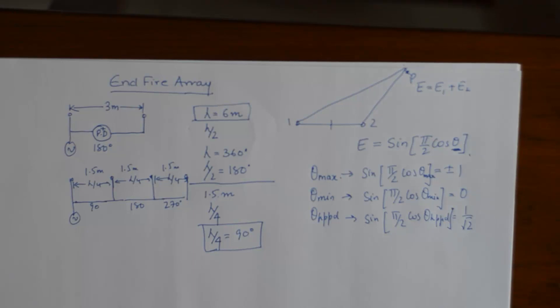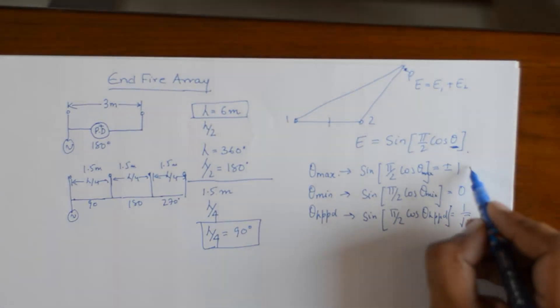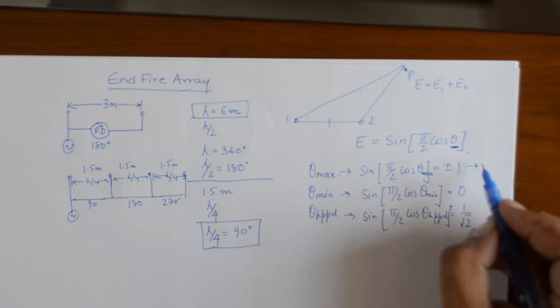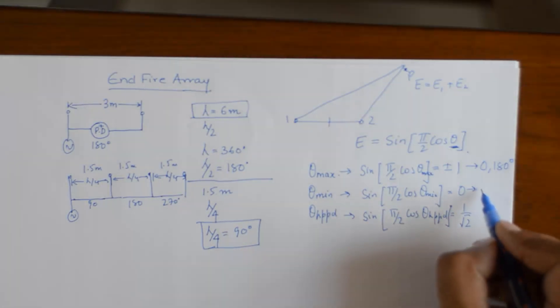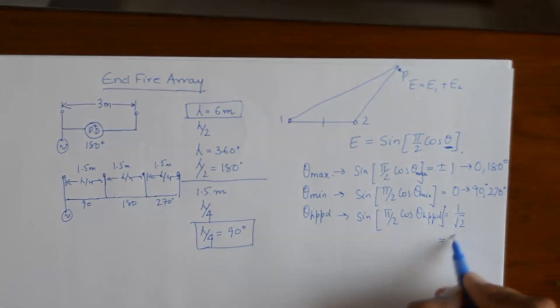So this gives me point of maximum radiation at 0 and 180 degrees. This gives me point of minimum radiation at 90 and 270. And theta HPPD comes out to be 60 and 120.